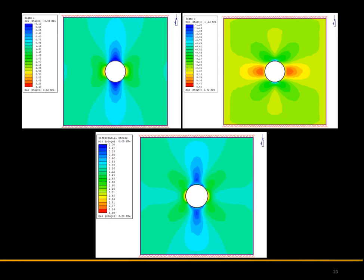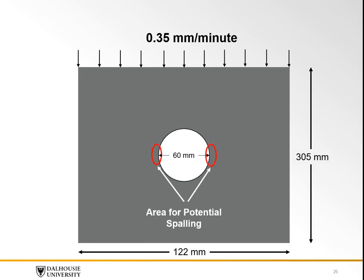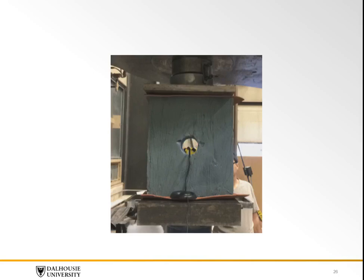A uniform load will be applied to the test block at a rate of 0.35 mm per minute. Based on the numerical model and theory of brittle failure, spalling is expected to happen along the spring line in the sidewalls of the tunnel. The test block was loaded into the press, and the video that follows provides a visual of massive rock under high stress.